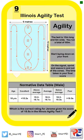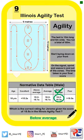As Jerome scored 18.6 seconds, when compared to the normative data, his rating should be below average, as it falls between 18.2 and 19.3 seconds.